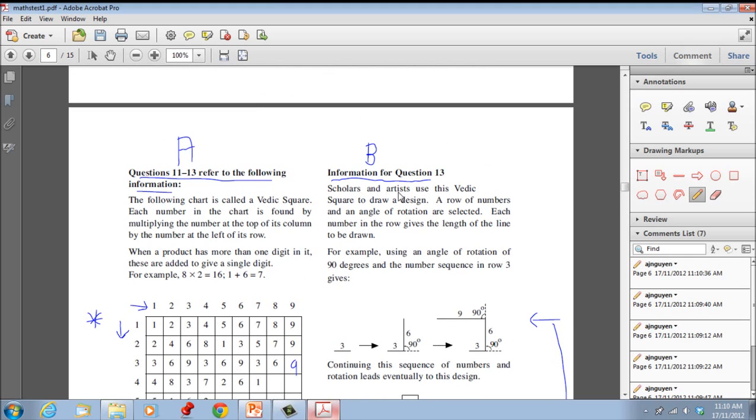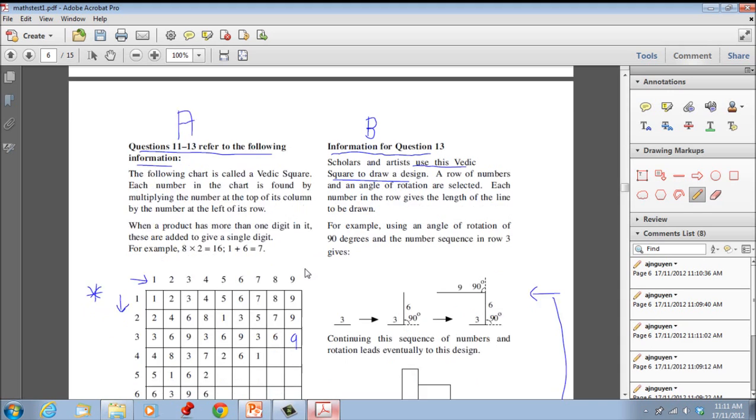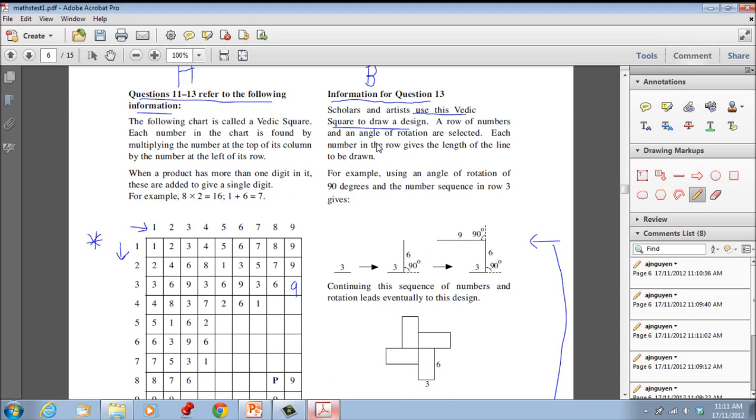Let's go on to information B. Scholars and artists use this Vedic square to draw a design. You can see now that this information A does relate to question 13. A row of numbers and an angle of rotation are selected. So first they select a row of numbers from this square, and then they choose an angle of rotation. Each number in the row gives the length of the line to be drawn.